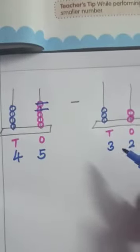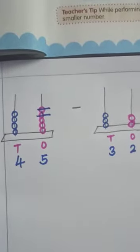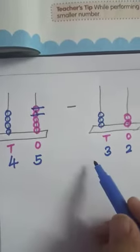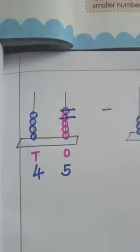Next, after subtracting numbers on one's place, we have to subtract numbers on 10th place. So, how many we have to subtract? 3. So, take it from here. 1, 2, 3.